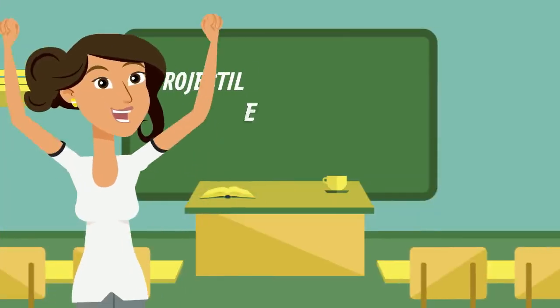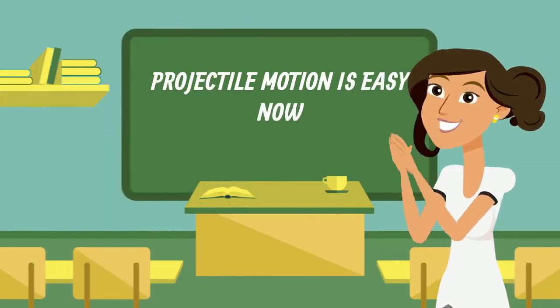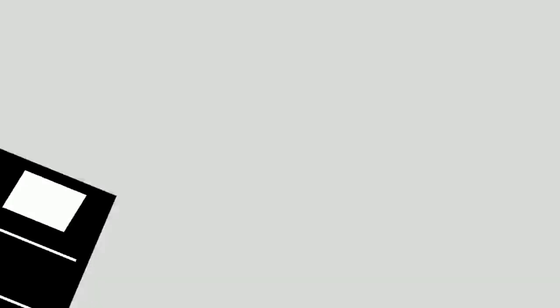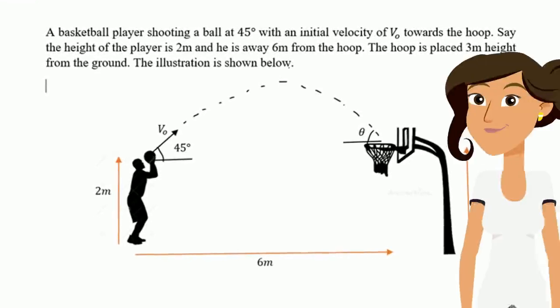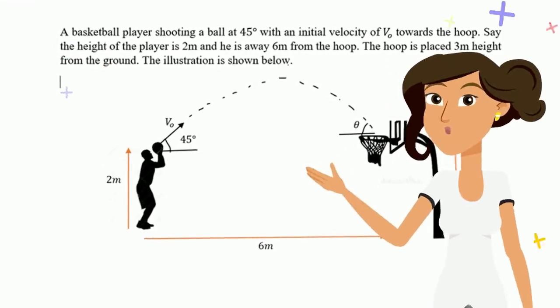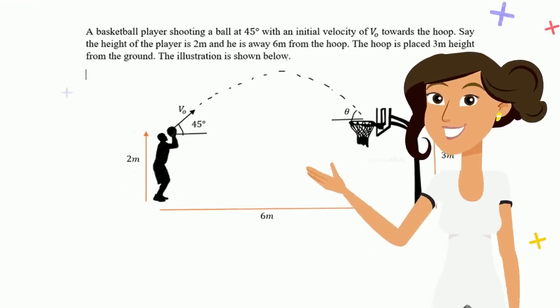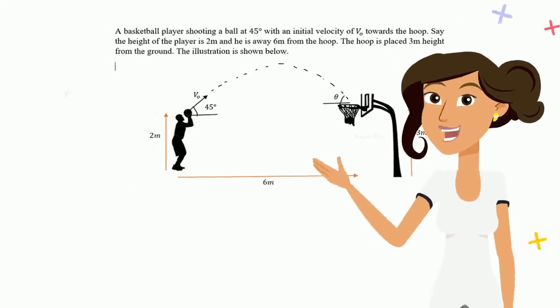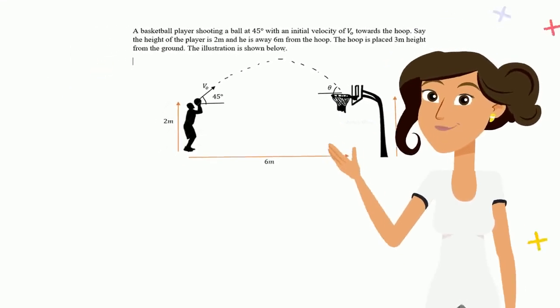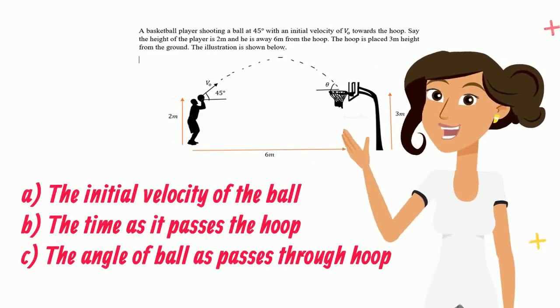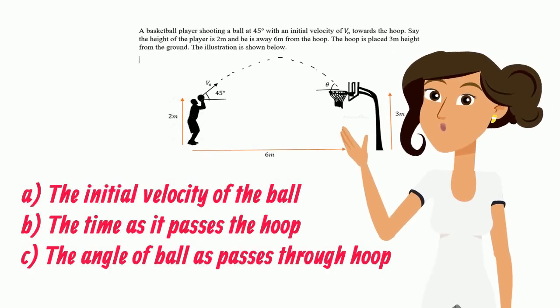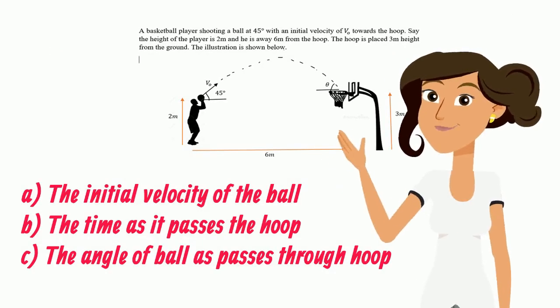Congratulations! Now we have covered projectile motion fully. Let's discuss an example. In this example, a 2m height basketball player shot the ball towards the hoop mounted 3m above. If the ball thrown 6m away from the hoop with an angle of 45 degrees, calculate the initial release velocity, the time as it passes the hoop, and the angle of the ball as it passes the hoop.